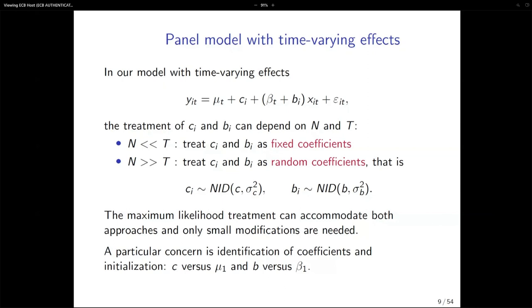All these different approaches of random coefficients and fixed coefficients are really the same thing. There are always some issues about identification when you go two ways — both in the cross-section and the time series dimension. But that's more to do with initial conditions: the initial value for the trend of the intercept and the trend in the slope coefficient. They need to be set equal to each other, or you set one to zero and estimate the other. There are always some nitty-gritty details of how to do the identification.